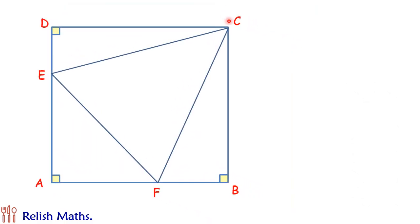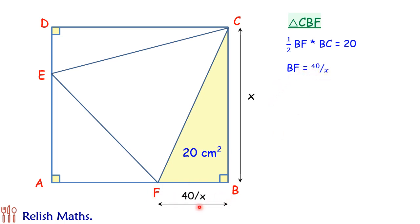Let's check the solution. Let's assume the side of the square is x cm each. If we have a look at triangle CBF, the area is 20 cm squared. Using the formula half base into height, we get half of BF times BC is 20. Putting BC as x, we'll get the value of BF as 40 upon x.